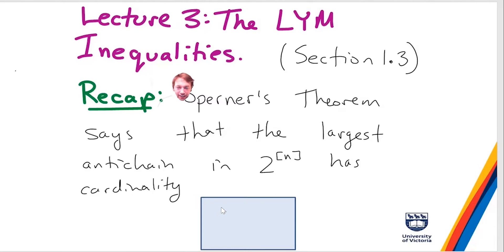Okay, so Sperner's theorem says that, as we know, the largest anti-chain in the power set of 1 up to n, so this is just a recap from the first lecture, is n choose n over 2.